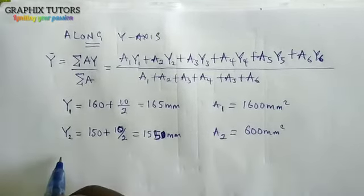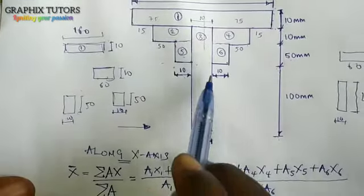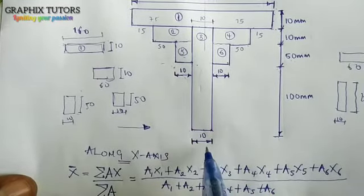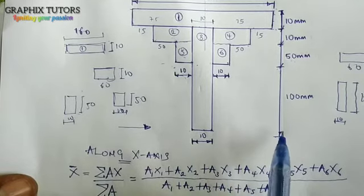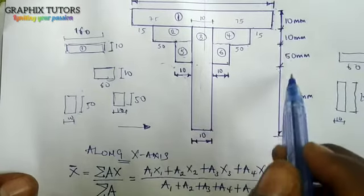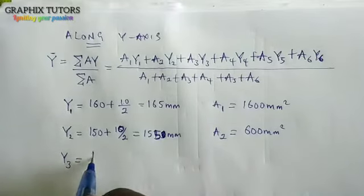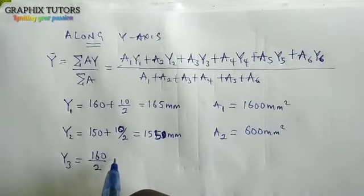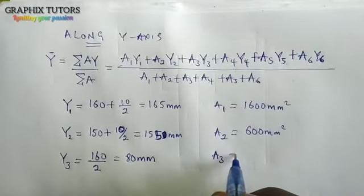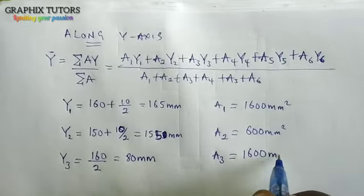For y3: this figure touches the ground, so from here the total distance is 160, which is 100 + 60 + 10... wait, I mean the total length is 160. So y3 = 160/2 = 80 mm. The area A3 remains 1,600 mm².